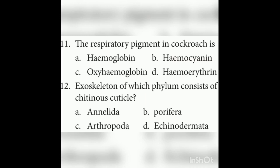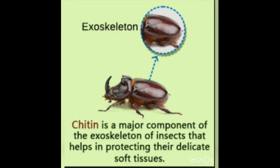Twelfth question: The exoskeleton of which phylum consists of chitinous cuticle? Arthropoda. The outer covering of arthropods — for example cockroach and millipedes — has a hard covering called chitinous cuticle.